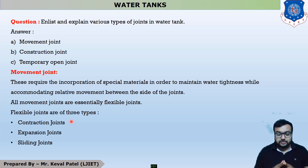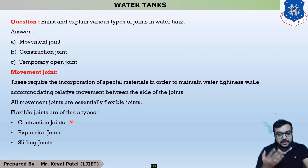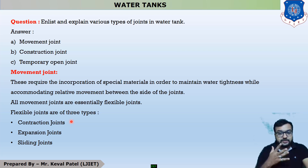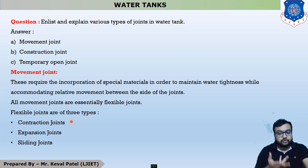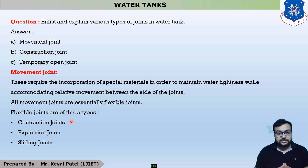In today's introductory session on water tank design, we covered the three types of water tanks — underground, overhead, and rest on ground — the five key design considerations, the permissible stresses of concrete and steel, and the types of joints. This concludes today's session. Thank you.